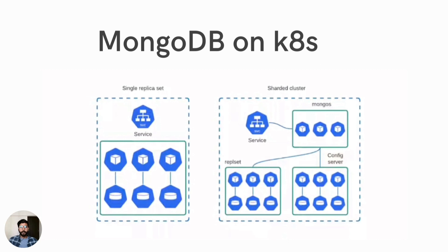The most straightforward way to set up a single replica set involves three components and three storage volumes. It needs to configure all these nodes to talk to each other, handle the networking, persistent storage, and dedicated computing capacity, as we discussed earlier.